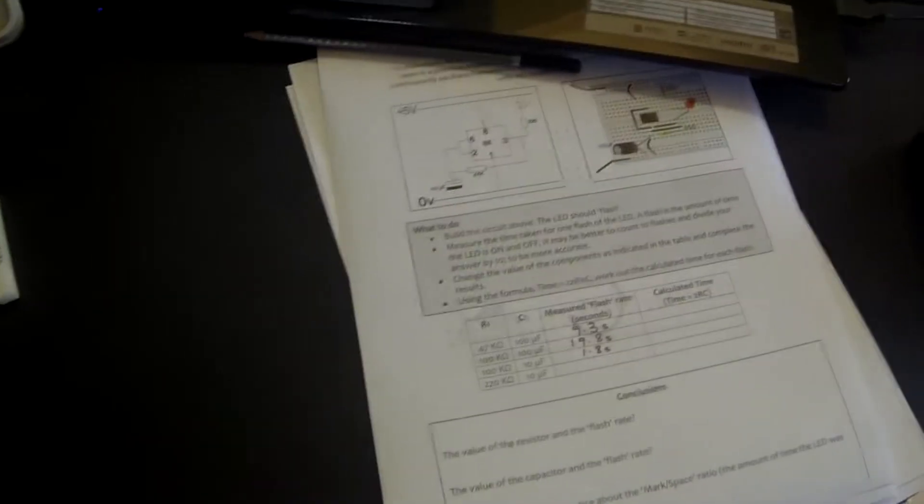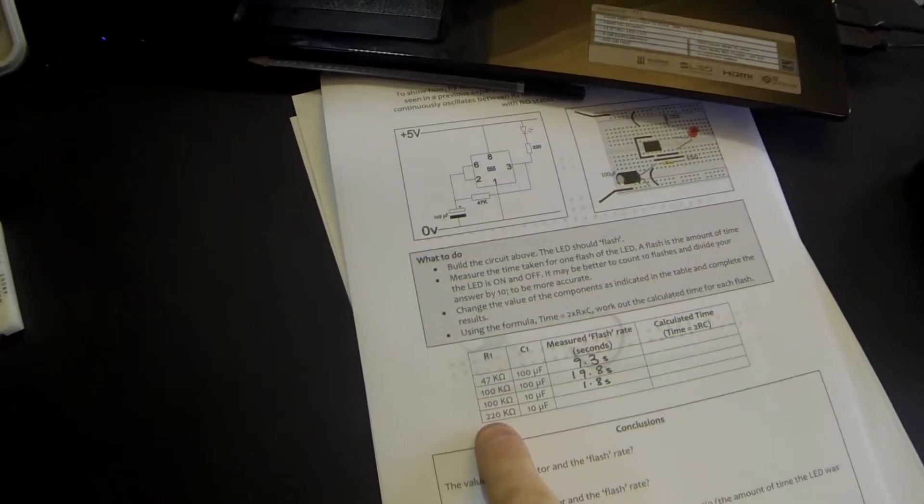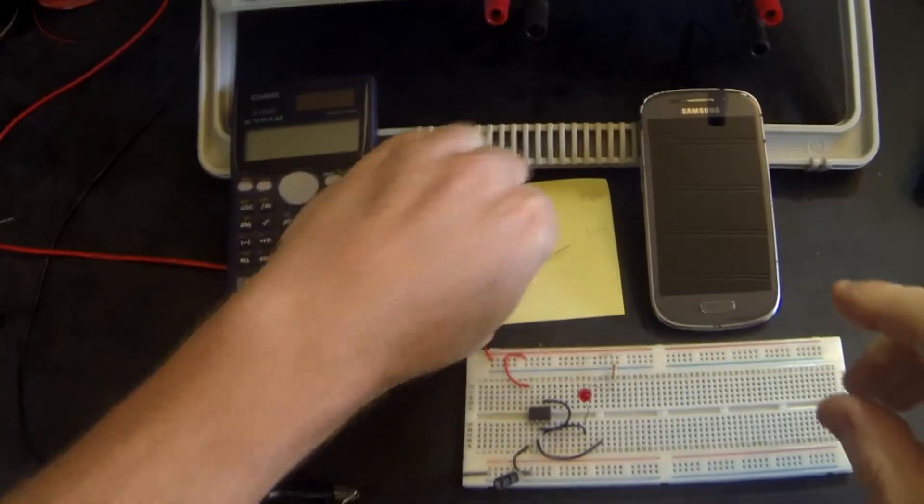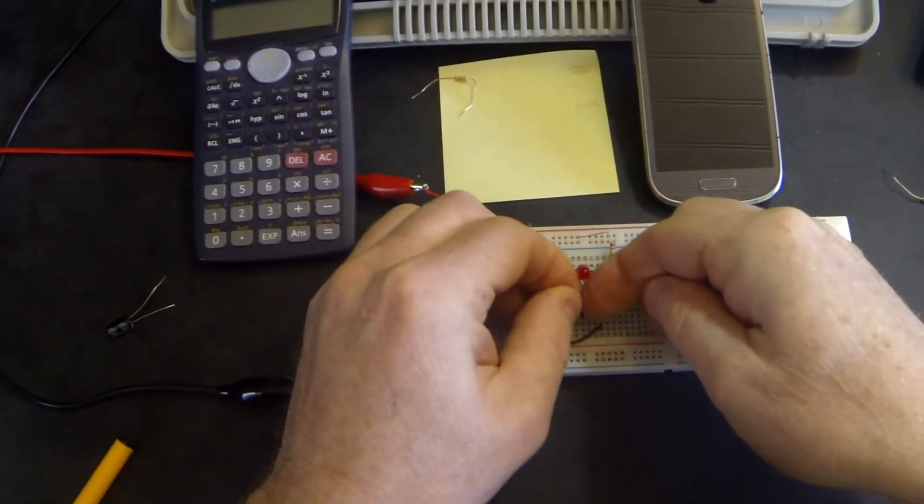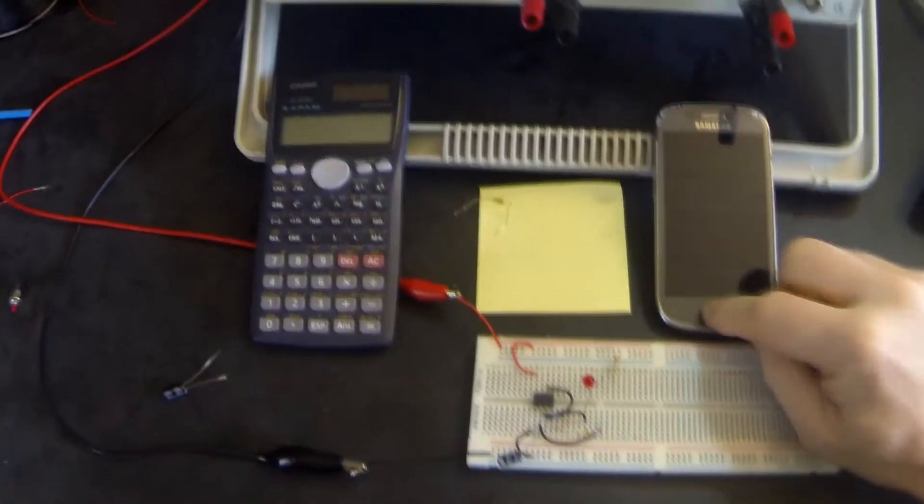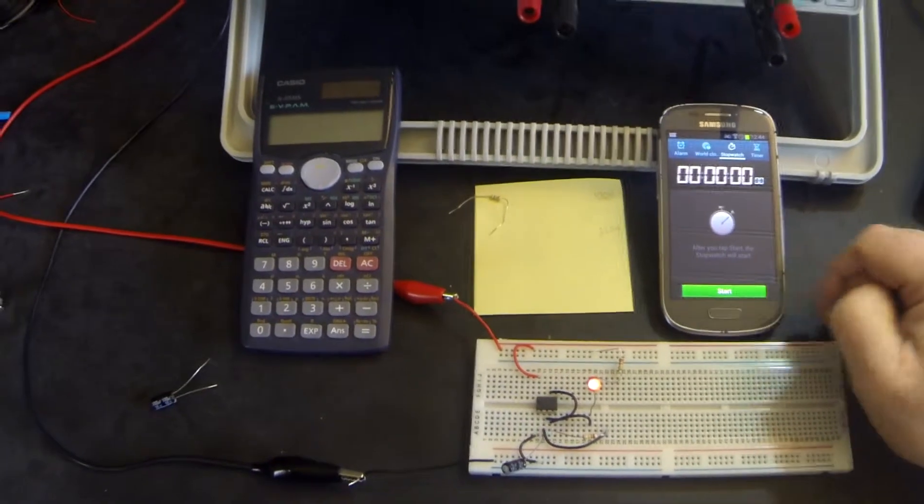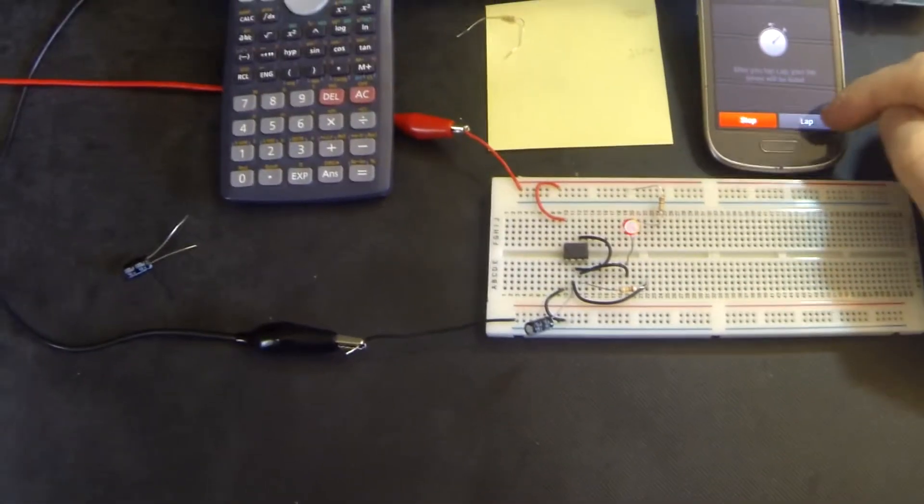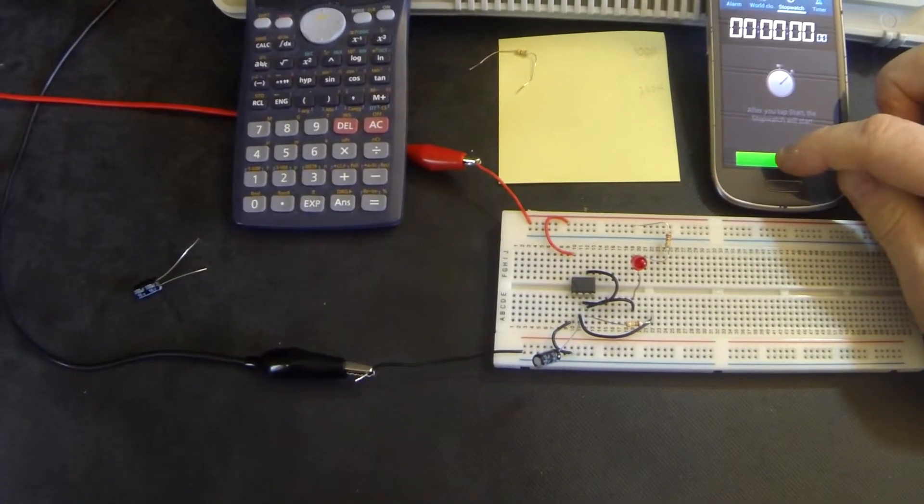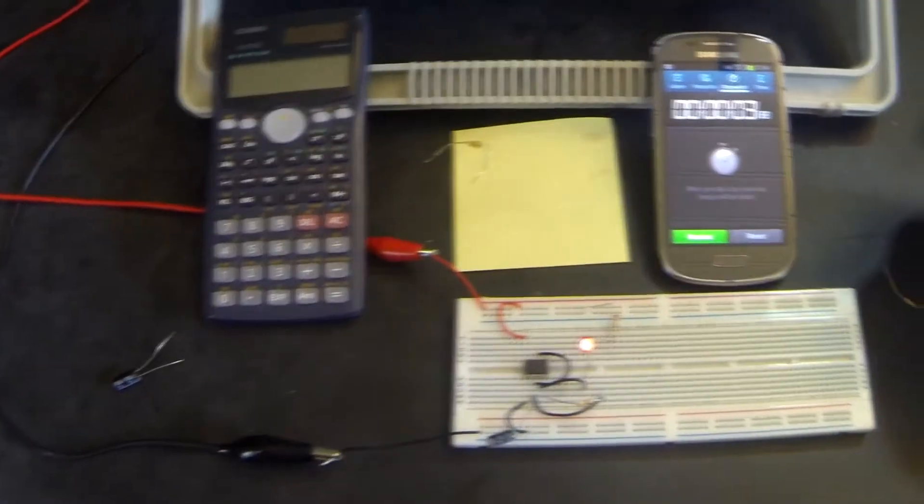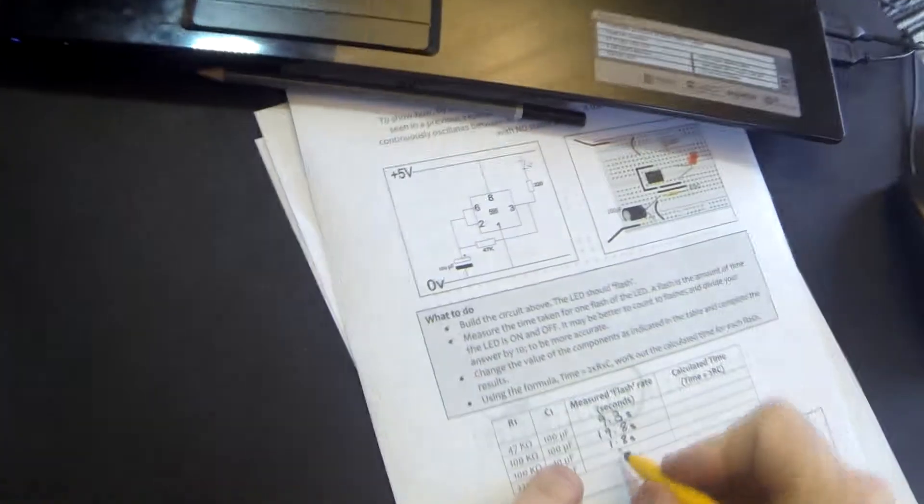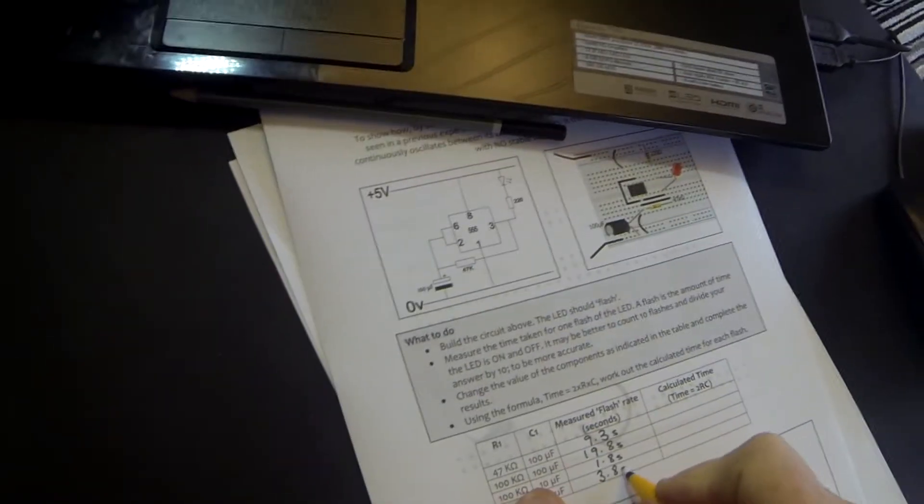Next, we're going to change the 100 kilohm resistor for 220 kilohm, keeping the value of the capacitor the same. Turn it on. Okay. And next time it flashes, we'll start. Oh, I was a bit slow there. I'll redo that one. There we go. 3.88 seconds. I could have measured 10 there, but I won't. I think that will be accurate enough.